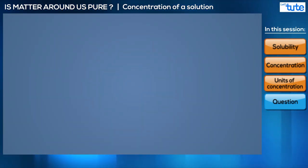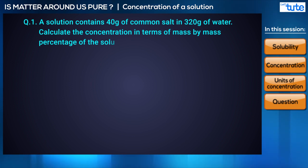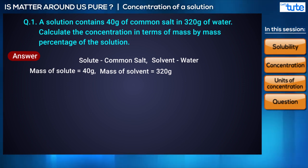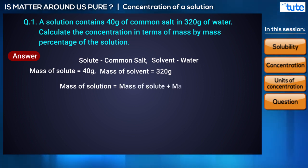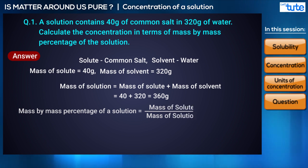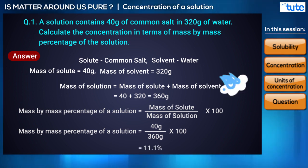To understand these terms better, let us solve a problem: a solution contains 40 grams of common salt in 320 grams of water — calculate the concentration in terms of mass by mass percentage. Common salt is the solute and water is the solvent. Mass of solute = 40 g, mass of solvent = 320 g, so mass of solution = 40 + 320 = 360 g. Substituting in the formula: mass by mass percentage = (40 / 360) × 100 = 11.1%.